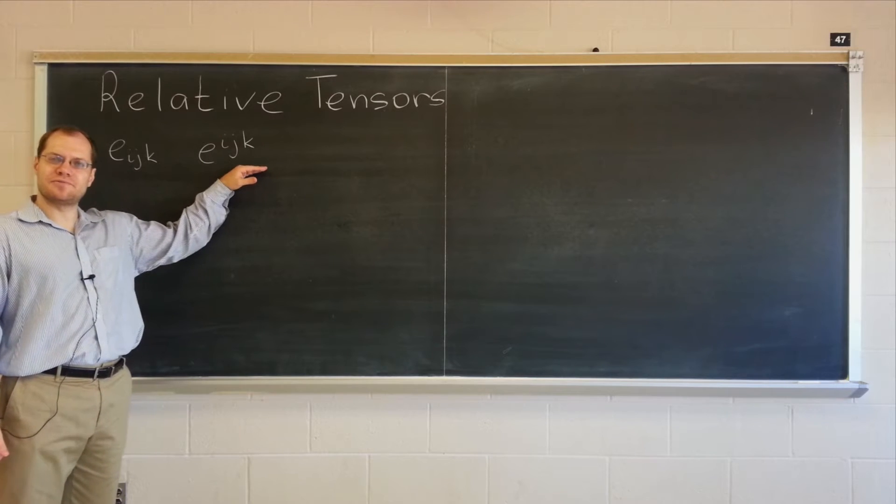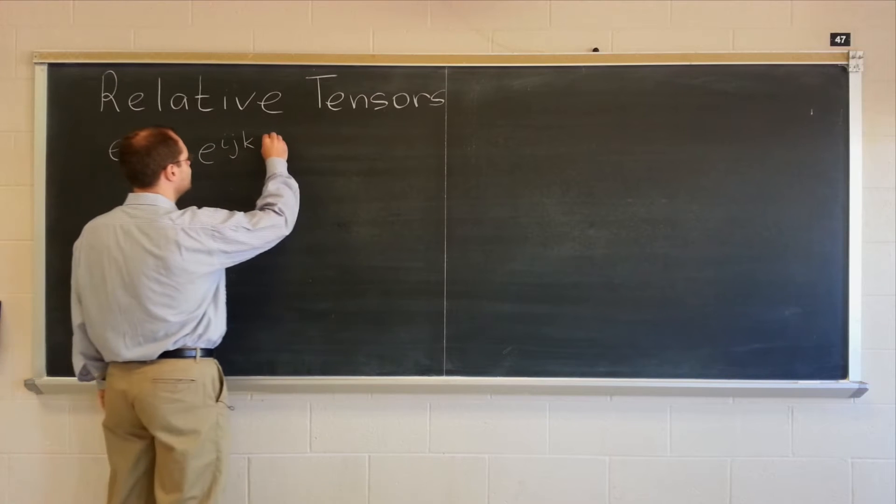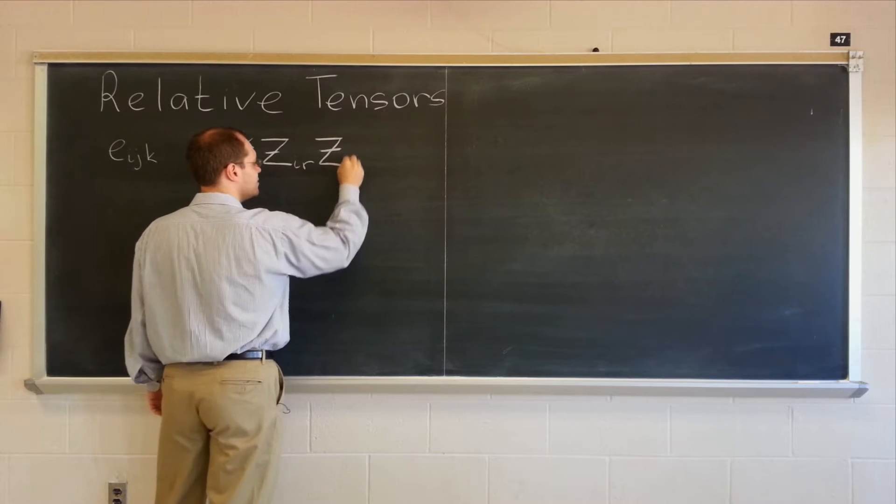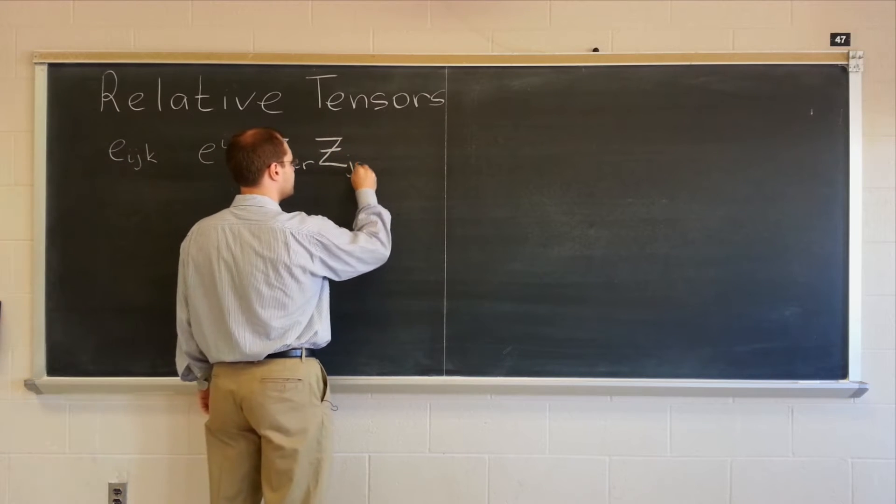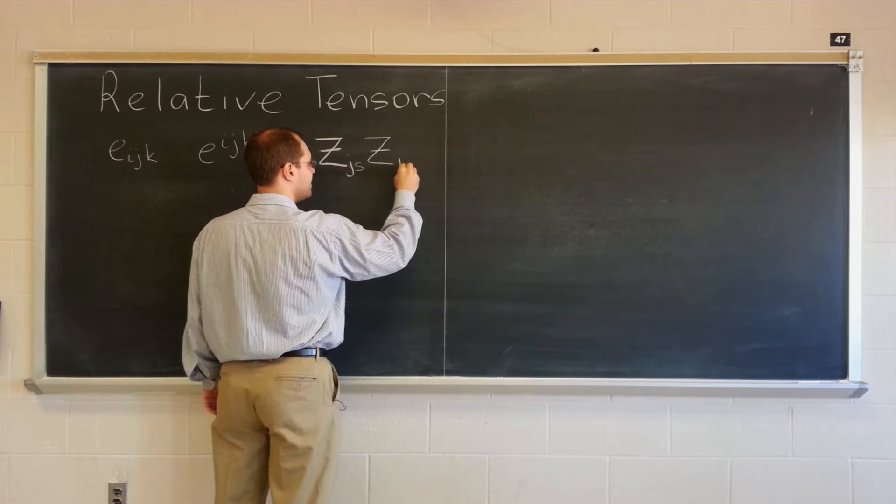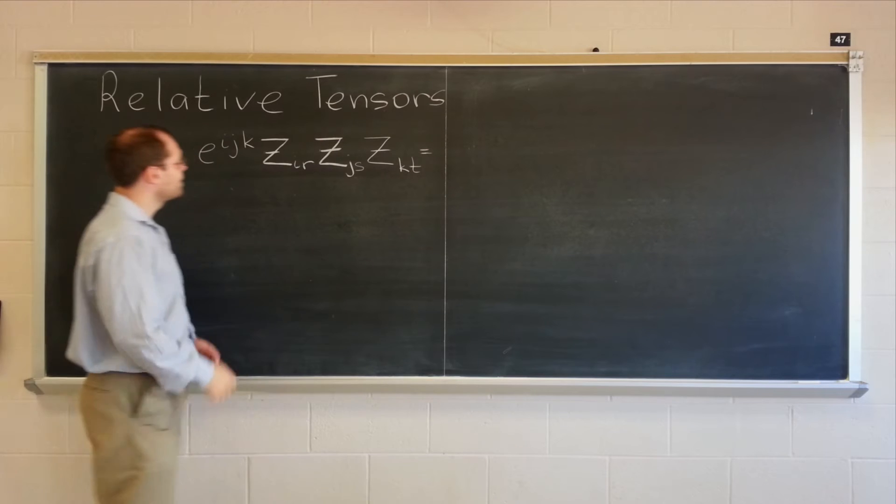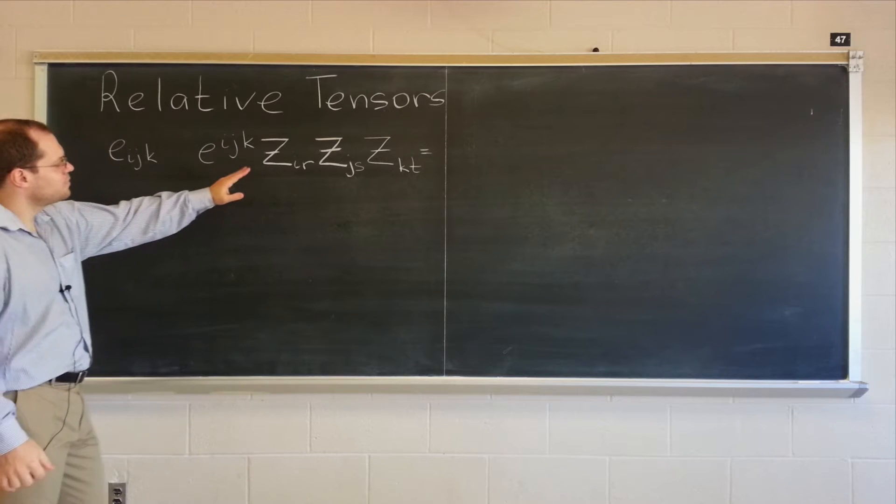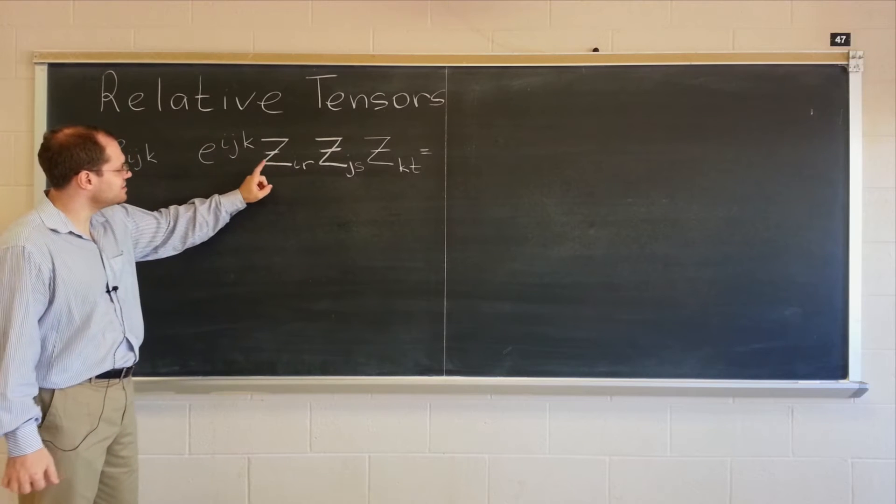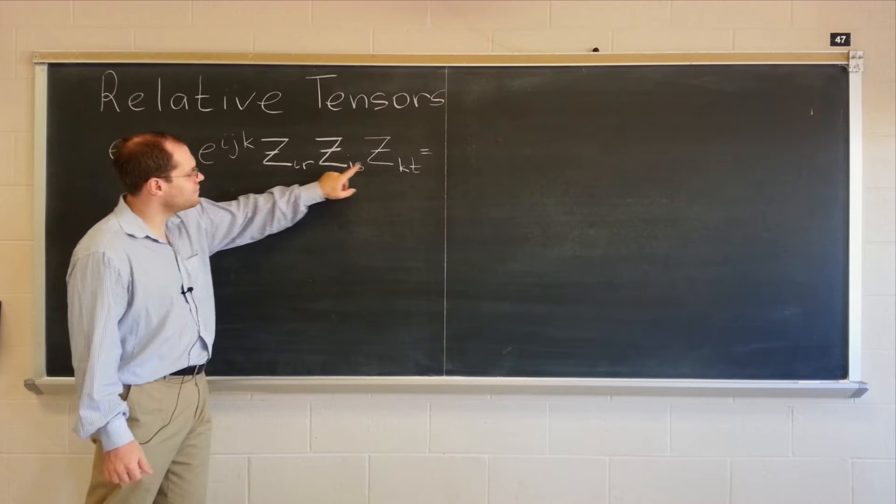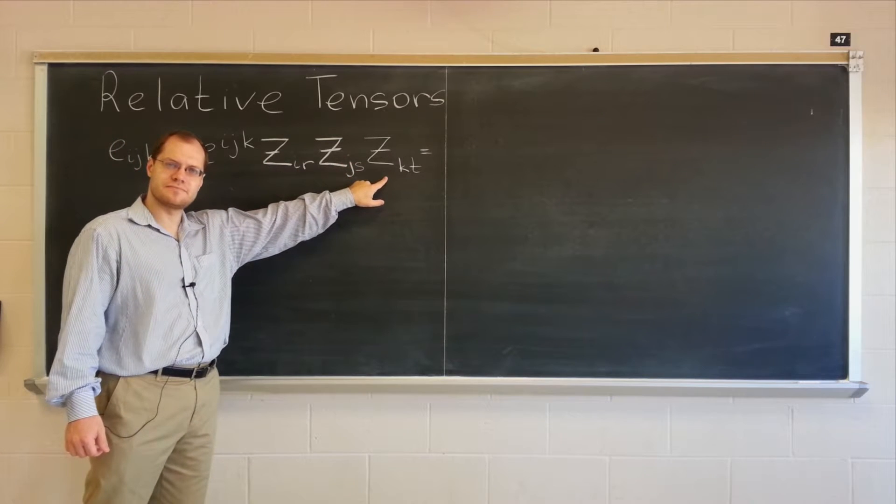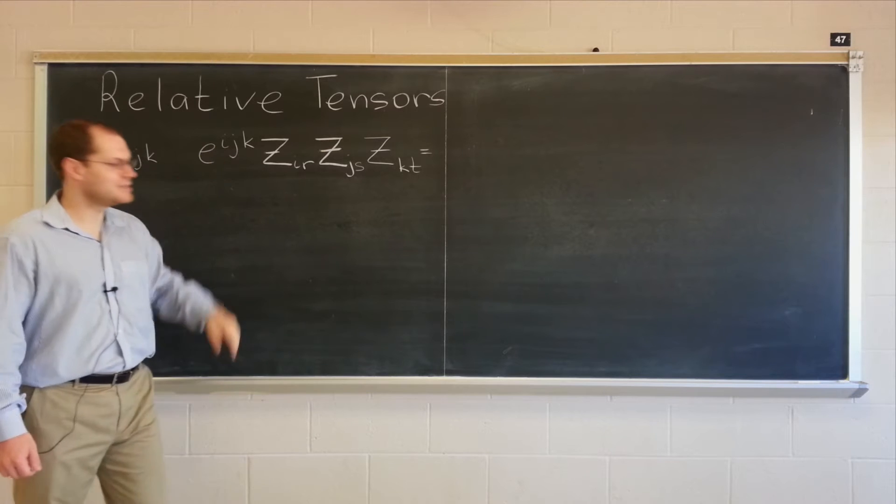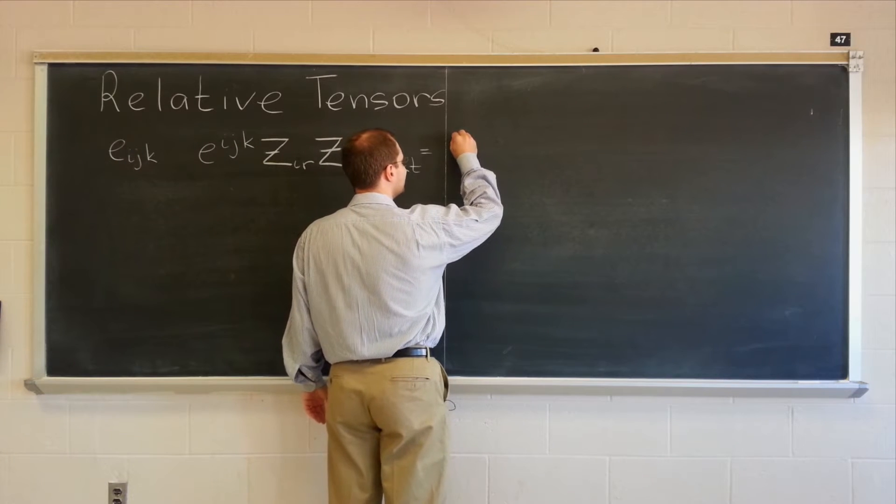Alright, let's lower each of the three indices on this object. That means contracting with ZIR, ZJS, and ZKT. And of course, from the determinant lecture, you know that this expression is precisely the determinant of the covariant metric tensor times the permutation symbol with lower indices. So it equals Z.